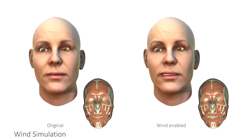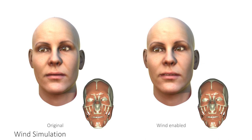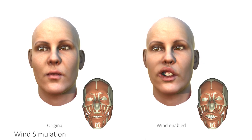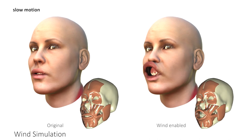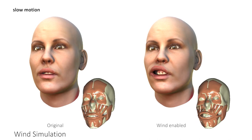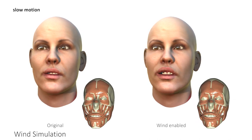Now we see how an external force, such as wind, interacts with our character while performing expressions. Note the effects of secondary motion and collisions.